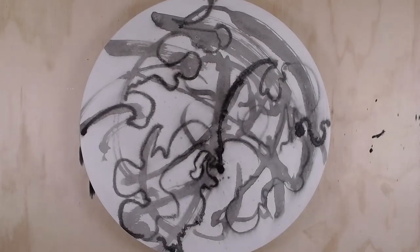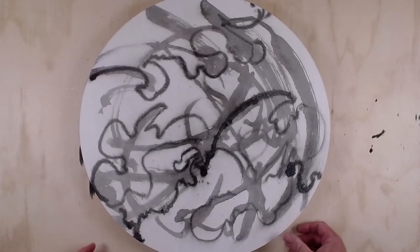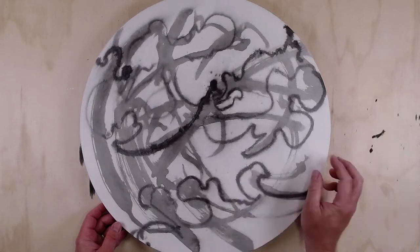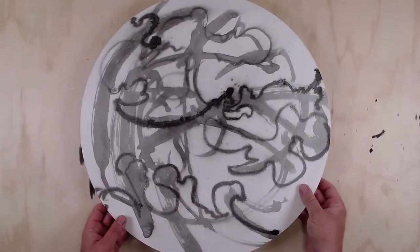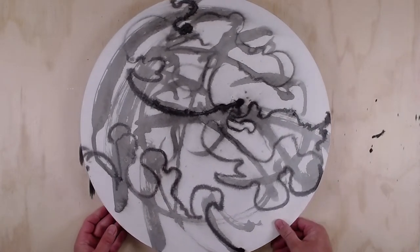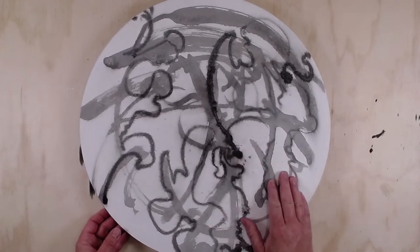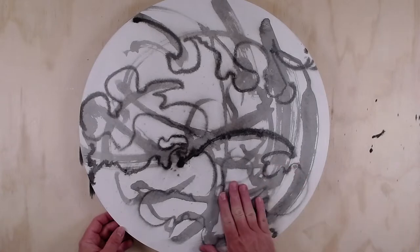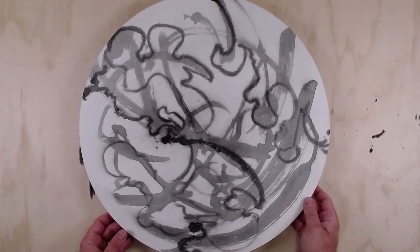Hi there. I am going to be working on these again. I have 10 of these round panels. They're about 22 inches across. I have a couple different layers on here. I had started these with some absorbent ground and gesso.